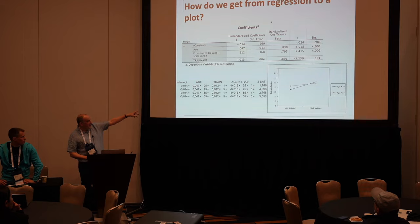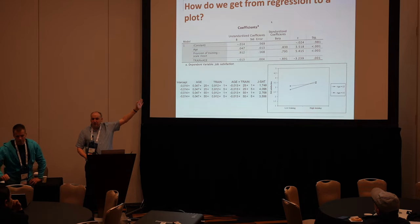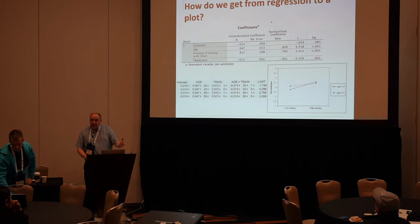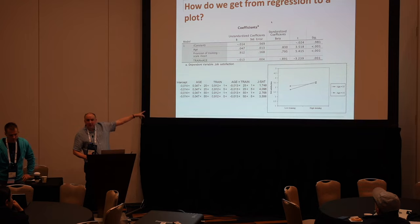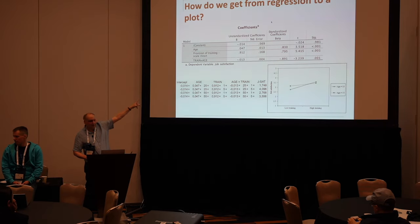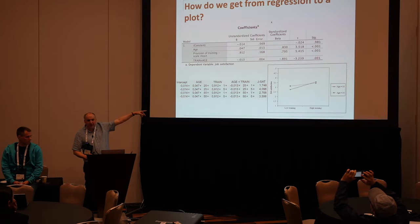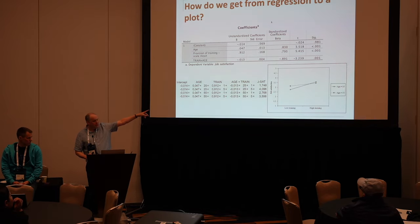But how do we get from that output — which is some example SPSS output — to the plot? It's simply using the regression equation and substituting in values for the independent variable and moderator. In this case we've put in values for age which are 25 and 55, representing a younger and older worker. We put values in for provision of training which are 1 and 5 — the minimum and maximum values. It just works through the equation: you see the intercept, the coefficient for age multiplied by 25 or 55, and so on, giving a value of job satisfaction for each combination.